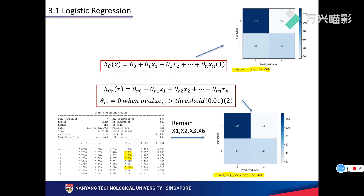Next, I will predict the data using three models. In the logistic regression, first I will calculate the normal regression accuracy. Then, I will fit the data in order to figure out the insignificant variables. Then, I remain S1, S2, S3, and S6. Finally, I conduct the final regression accuracy.